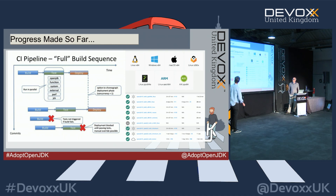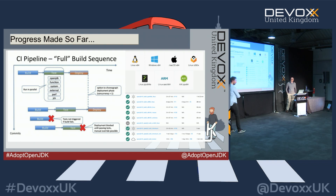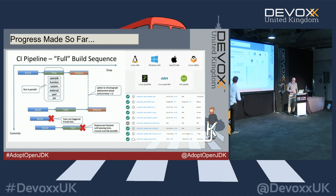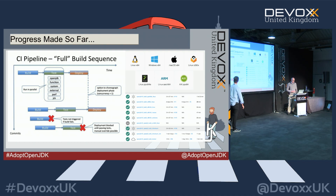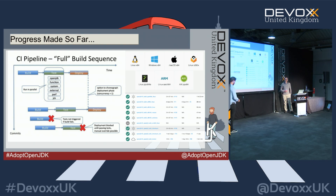We've got a well-defined system in Jenkins where we build across a whole variety of architectures, platforms, and variants — all in parallel. As each build gets pushed through, it hits a test pipeline where we run a whole variety of tests. The idea is to test not only compliance but to ensure our Java binaries are of a good standard. These are all run in parallel, and at that point we deploy up to our website. If things fail, we don't deploy — it's a nice automated way without many users having to intervene at all.